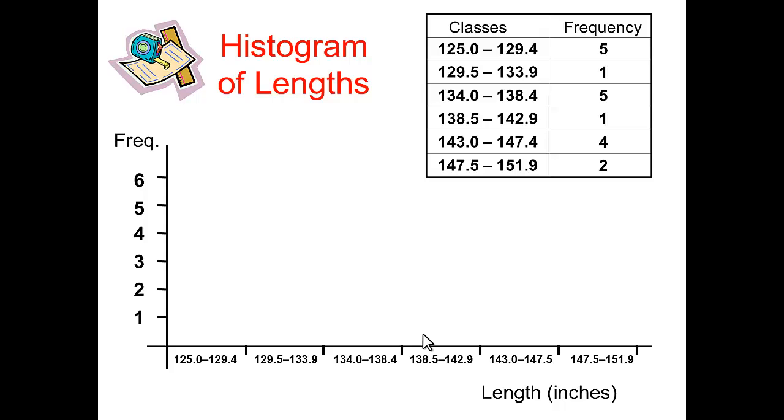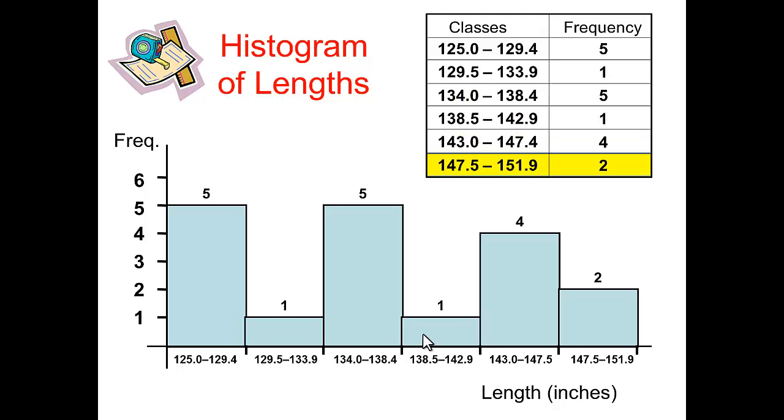The first class has a frequency of 5, so the height of the first bar will be 5. The second one has a frequency of 1, so that bar has a height of 1. Then a height of 5 for the next bar, then 1, then 4, then 2.